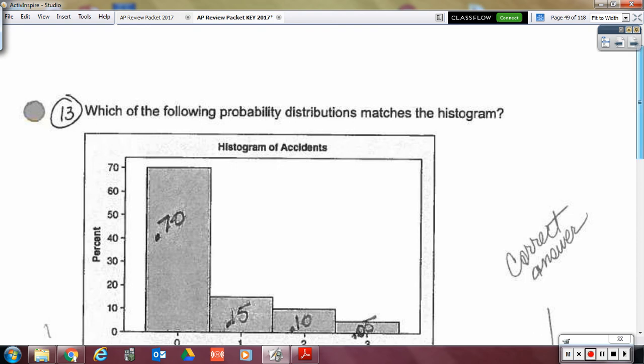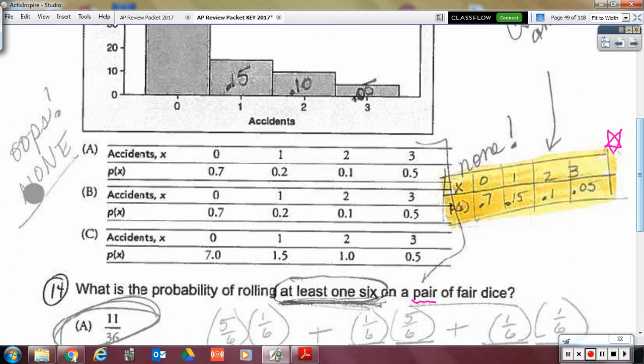All right. Number 13 did not have the correct answer as an answer choice. So here is the correct answer. X is 0 was 0.7. 1 goes with 0.15. 2 goes with 0.1. And 3 goes with 0.05. Okay. So those were your correct probabilities that were not an option.